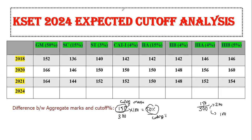Now have a look at these cutoffs. This is the 2018 cutoff, 2020 cutoff, and 2021 cutoff. The cutoff will vary based on the category, and there are reservations for different categories, so based on the category the cutoff will also vary.